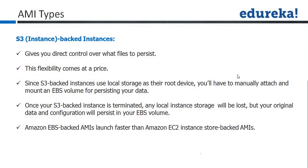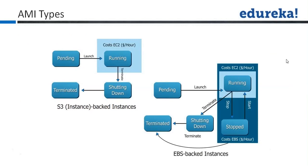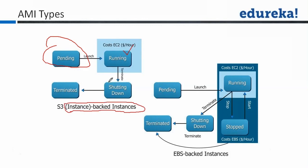EBS-backed AMI is more popular these days. When you launch an instance, a general instance would be in a pending state then it becomes running — this is the lifecycle for an Instance Store-backed AMI. It would be in a running state and then a shutting down state. Amazon would charge you only for the running time. When you terminate, all your data would be lost and the instance would be terminated; Amazon would not charge you at all after that.